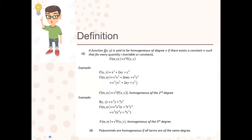A function of x and y — meaning a function having variables x and y — is said to be homogeneous of degree n if there exists a constant n, where n is a positive whole number, such that for every quantity r (a variable or a constant), your function is able to preserve its original form. If in a function having variables x and y you change x and y to rx and ry, the original function after factoring r raised to n is still the same function originally given.